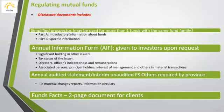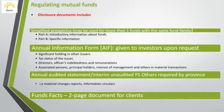Now we talk about regulating mutual funds. The disclosure documents for mutual funds include many different documents. One of them is the simplified prospectus. There can be one prospectus for more than one fund in the fund family. There are two parts of the prospectus: Part A is introductory information about the funds, and Part B is specific about the fund that they're buying. We will talk in more detail about the prospectus in the next slides.